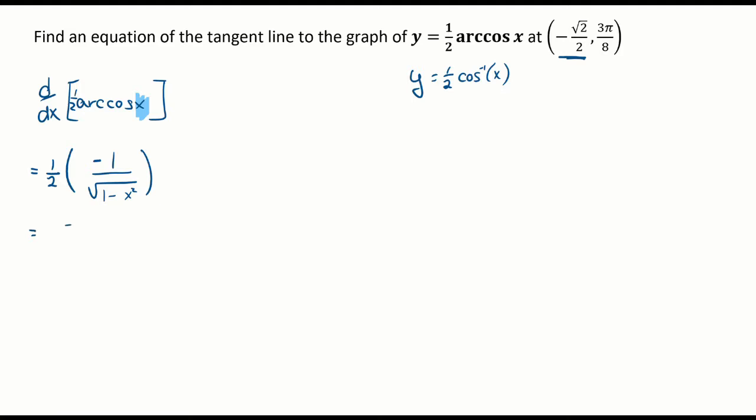So the derivative is equal to negative 1 over 2 times the square root of 1 minus x squared. Now I have to find the derivative evaluated at negative square root of 2 over 2. That comes out to negative 1 divided by 2 times the square root of 1 minus (negative square root of 2 over 2) squared. Lucky for us, we're squaring, so that's going to get rid of the square root, giving me just 2.